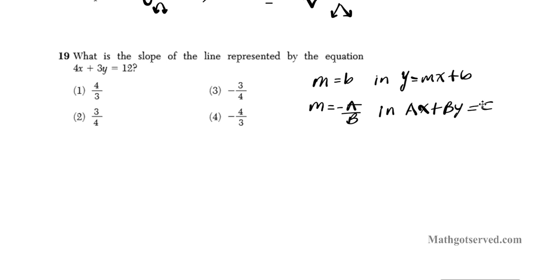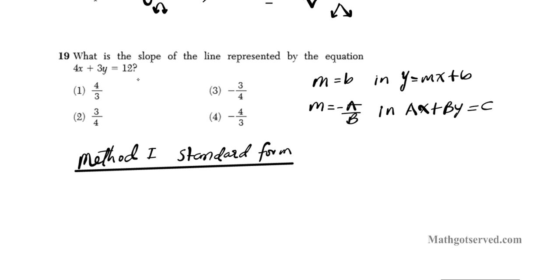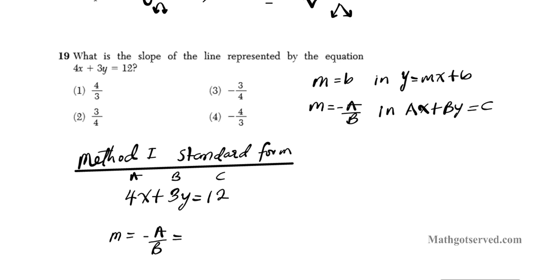Let's use both methods to find the slope. Method one uses standard form. The equation 4x plus 3y equals 12 is already in standard form, so it's much quicker. Here A is 4, B is 3, C is 12. The slope for standard form is negative A over B, so in this case it's going to be negative 4 over 3. That's the final answer — option number 4.